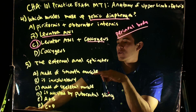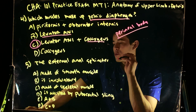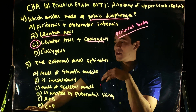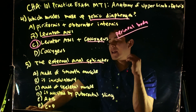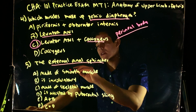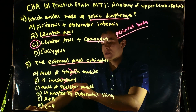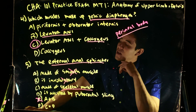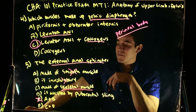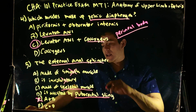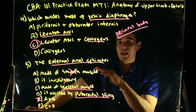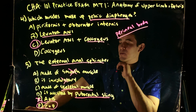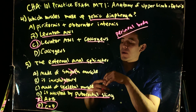The external anal sphincter is: A, made up of smooth muscle, or is involuntary — we can rule those out because if it's the external anal sphincter, you can consciously contract it, so it must be skeletal muscle and voluntary. D says it is assisted by the puborectal sling — that's exactly correct. The puborectal sling supports and assists the external anal sphincter. So our best answer, F, is: skeletal muscle, voluntary, and assisted by the puborectal sling.